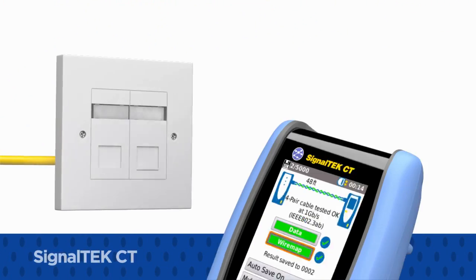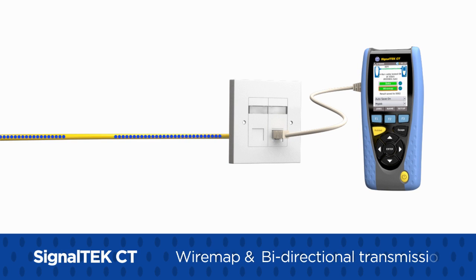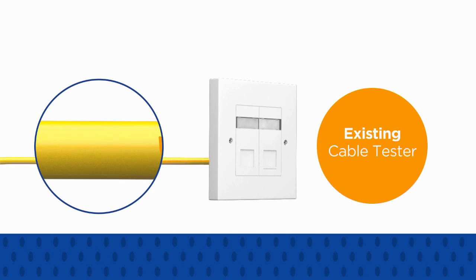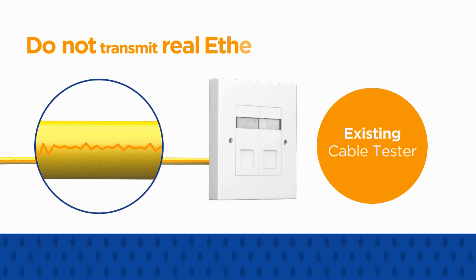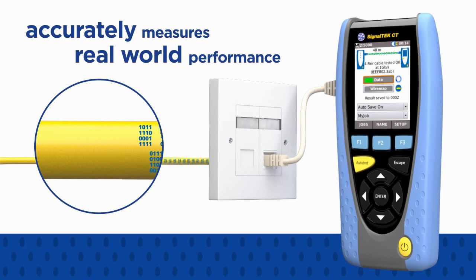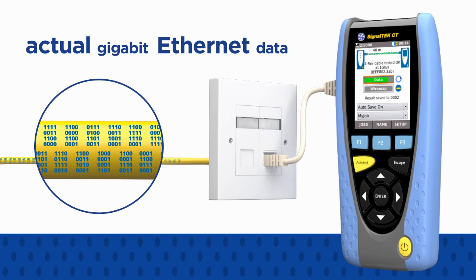How can you prove the speed and reliability of your data cable installation? The SignalTex CT quickly tests both wire map and bi-directional transmission performance of data cable. Existing cable testers often do a poor job of simulating network traffic because they do not transmit real Ethernet frames. However, SignalTex CT accurately measures real-world performance by loading the cable with actual Gigabit Ethernet data.